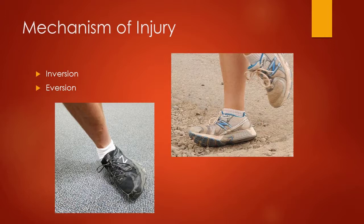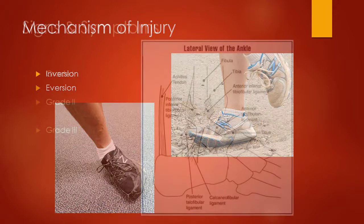An eversion ankle sprain typically occurs with a combination of eversion, dorsiflexion, and external rotation or abduction. Both of these ankle sprains are typically going to occur when a person is moving from either open to closed kinetic chain or vice versa.